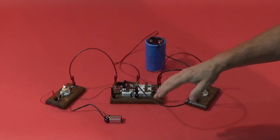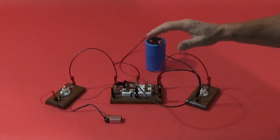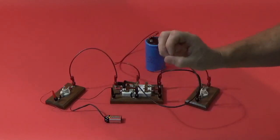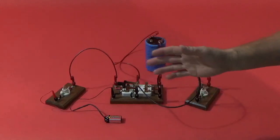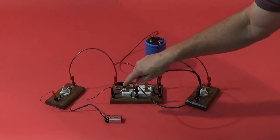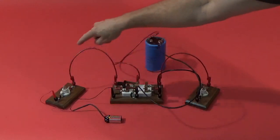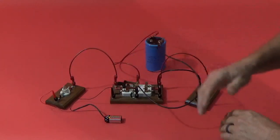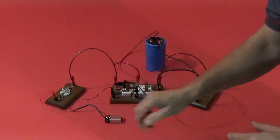As the capacitor fills up with charge, slowly and slowly the light bulb will dissipate and will basically go out. That means there's no current flow in that circuit. The capacitor is completely full with this voltage.